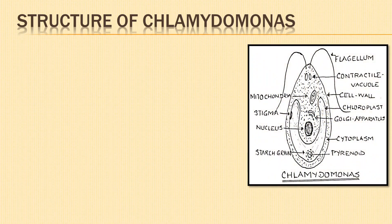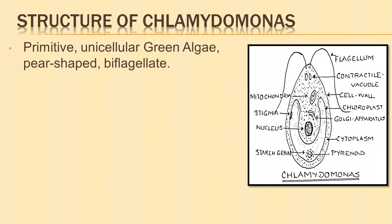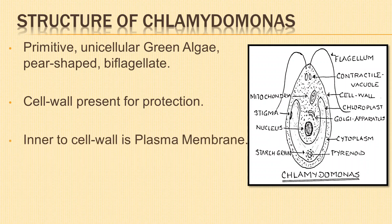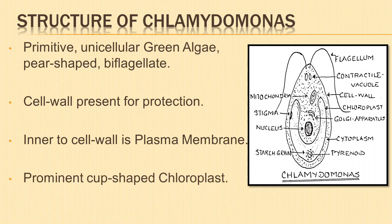Let us study the structure of Chlamydomonas. They are primitive, unicellular green algae, usually pear-shaped and biflagellate. The cell is surrounded by a definite cell wall for protection of the protoplast; the major structural component of the cell wall is glycoprotein. Inner to the cell wall is a semi-permeable cell membrane or plasma membrane. The most prominent structure in the protoplast is a single cup-shaped chloroplast, which is thick at the bottom and thin at the periphery and anterior end.